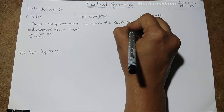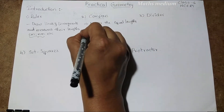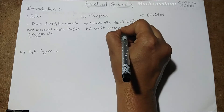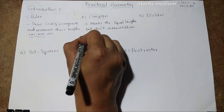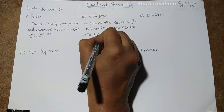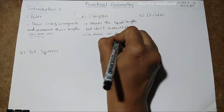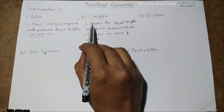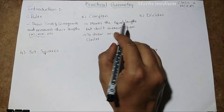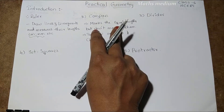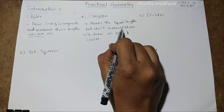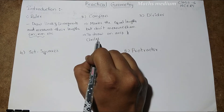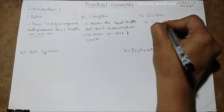Next, coming to the compass — it marks equal lengths but does not measure them. It is mostly used to draw arcs and circles. So the compass is used to mark equal lengths; you can use it to copy a line, but it does not measure the lines. It is used to draw arcs and circles.